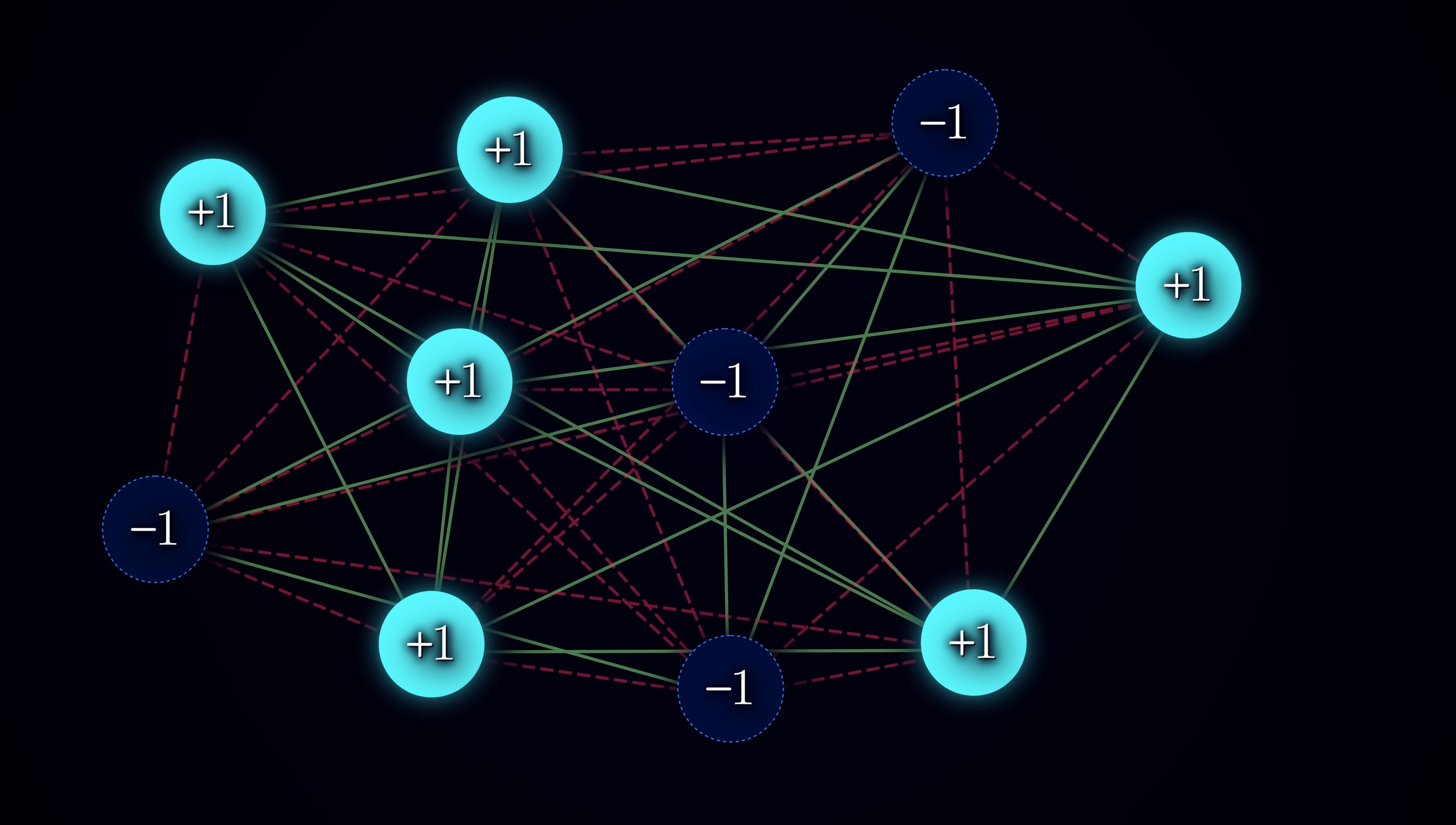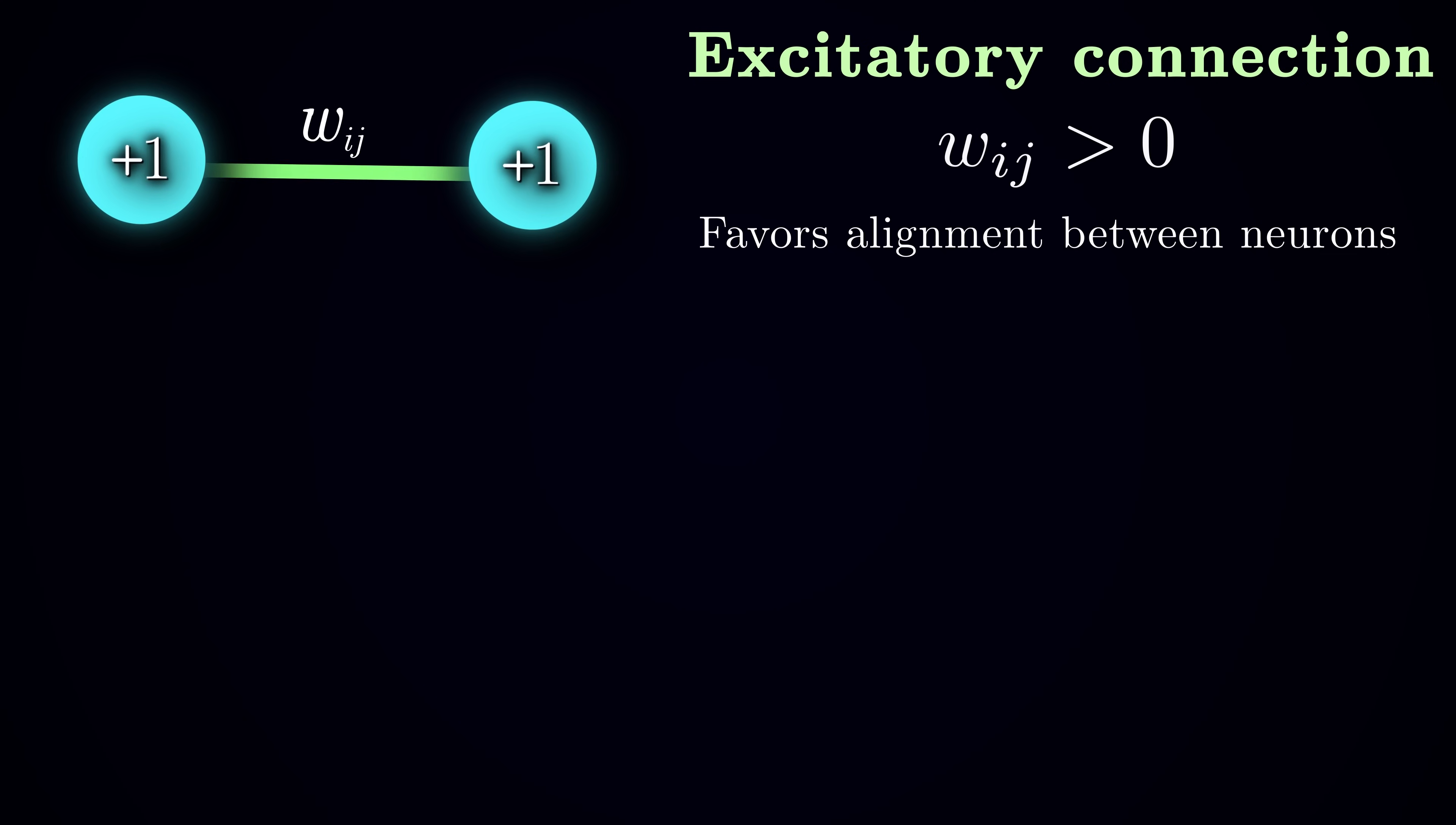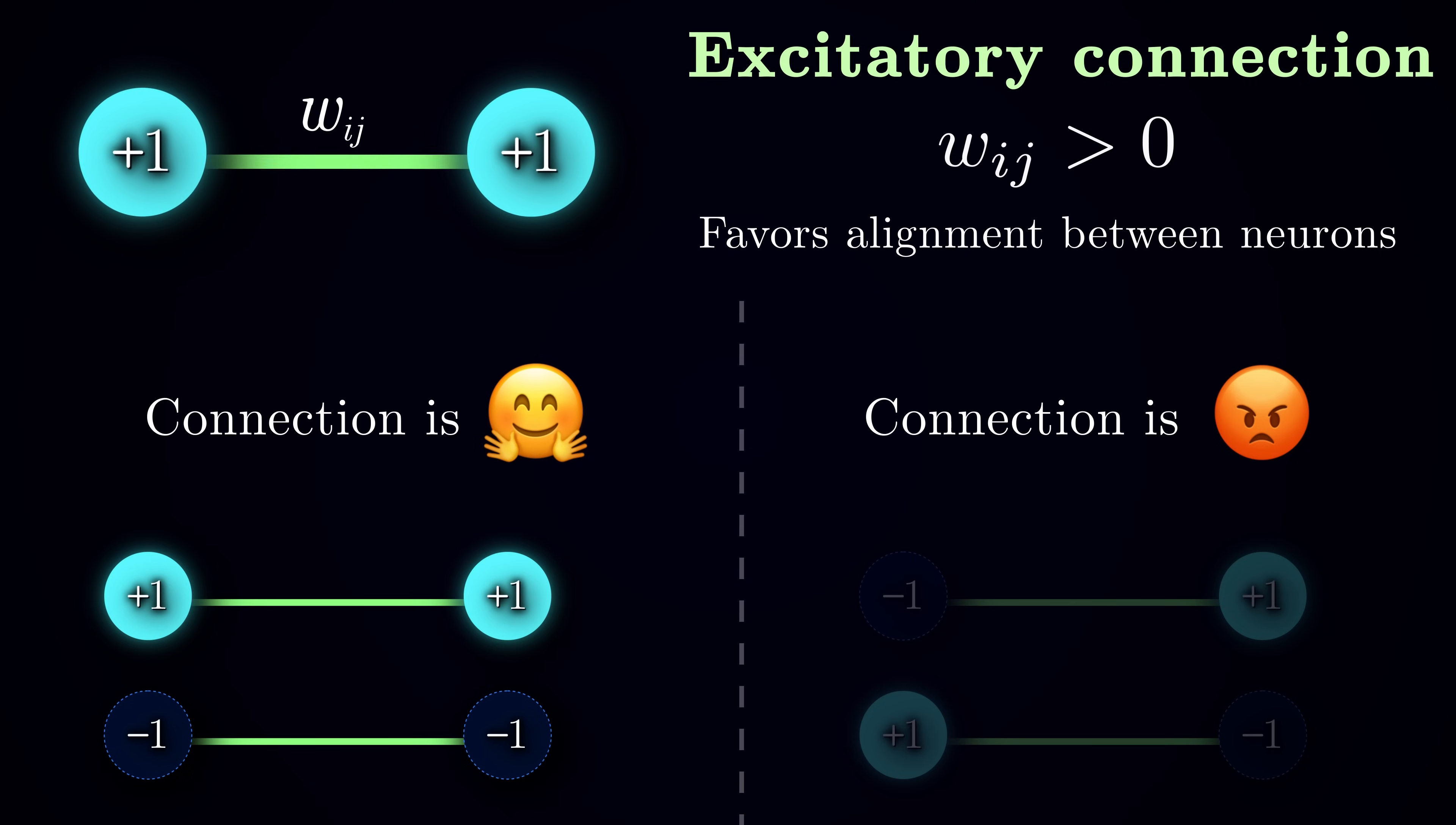Now that we have a set of neurons symmetrically linked with each other through weighted connections, let's explore what these connection weights represent. If wij is greater than zero, the connection is said to be excitatory and favors the alignment between the states of two neurons. We can think of each connection as being either happy or unhappy, depending on the states of its neurons.